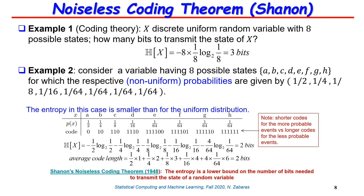This allows me to state Shannon's noiseless coding theorem from 1948: the entropy is a lower bound on the number of bits needed to transmit the state of a random variable. Think of entropy as the minimum number of bits needed, on average, to represent a symbol. As we see, the average symbol code length equals the entropy, and the entropy is the lower bound on the number of bits needed to transmit this random variable.